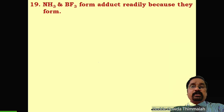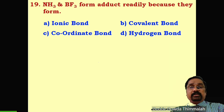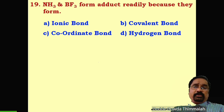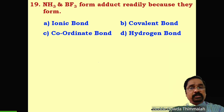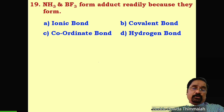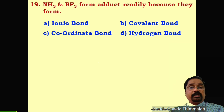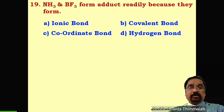Question 19: Ammonia and boron trifluoride form an adduct readily because they form what type of bond? The nitrogen atom of ammonia has a lone pair of electrons, and the boron atom of boron trifluoride is electron-deficient. Therefore, nitrogen donates its lone pair to boron — this is a coordinate bond, where the shared pair belongs to one of the atoms. The correct answer is C, coordinate bond.